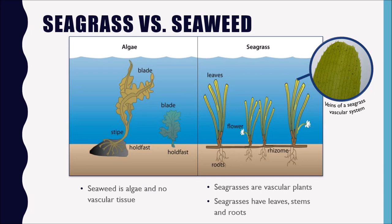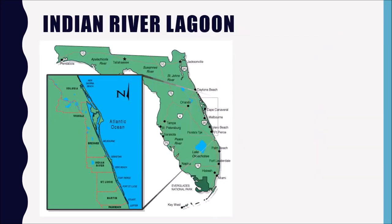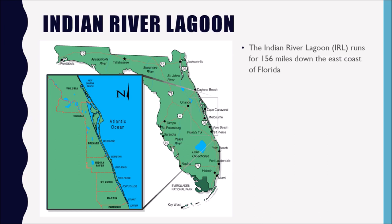Now, because we're going to be talking about seagrasses in our own backyard in the Indian River Lagoon, let's talk a little bit about the Indian River Lagoon. It runs for 156 miles down the east coast of Florida, starting at the Ponce de Leon Inlet in New Smyrna Beach and going all the way down to the Jupiter Inlet in northern Palm Beach County. It encompasses three different bodies of water: the Banana River, the Mosquito Lagoon, and the Indian River.